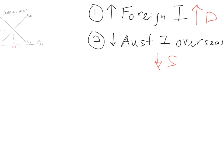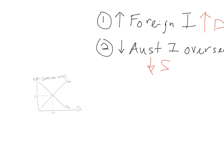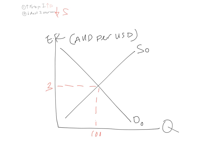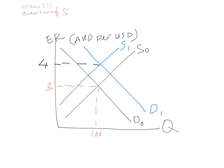We're going to reflect that in the graph. There's going to be an increase in demand — shown as D1 — and then a fall in supply — shown as S1. We had our old equilibrium, and now we have our new equilibrium. What you're going to see is that there is going to be an appreciation of the Australian dollar. Let's say it goes from $3 to $4. This should not be a surprise: if you increase demand and reduce supply, the price must go up.